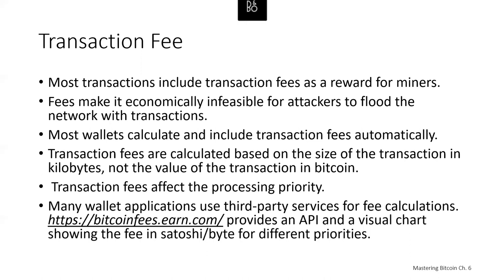In Bitcoin Core, fee relay policies are set by the minimum relay transaction fee option. The current default minimum relay transaction fee is 0.00001 Bitcoin per kilobyte. Transactions with a fee less than that are treated as free and only relayed if there's space in the mempool; otherwise they are dropped. Bitcoin nodes can override the default fee relay policy. Any Bitcoin service that creates transactions — including wallets, exchanges, and retail applications — should implement dynamic fees, either through a third-party fee estimation service or a built-in fee estimation algorithm.